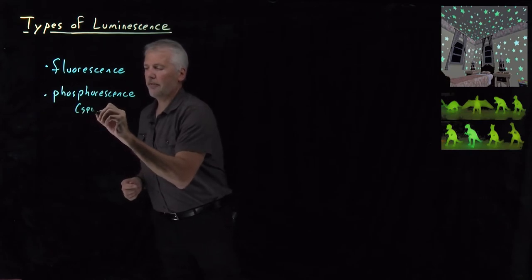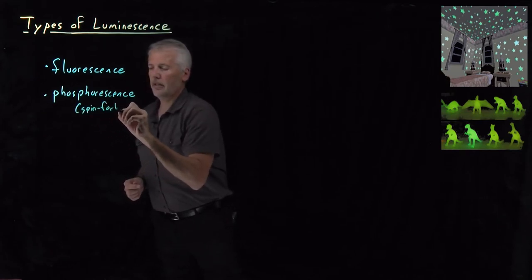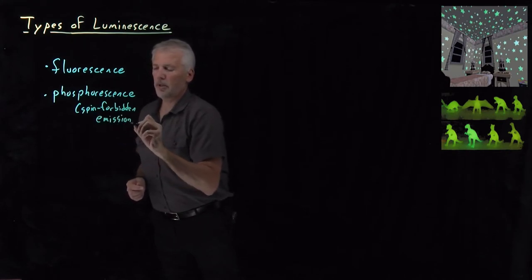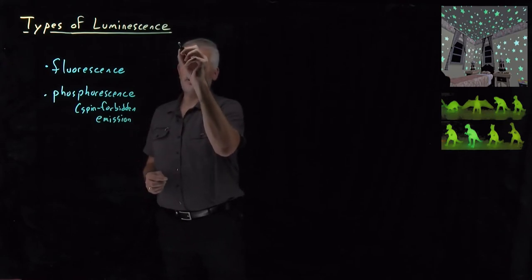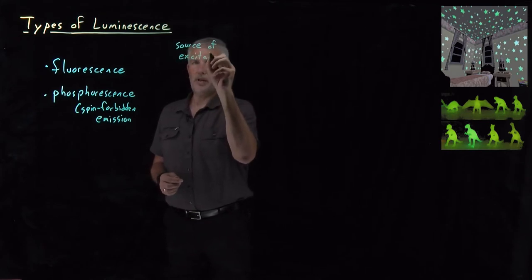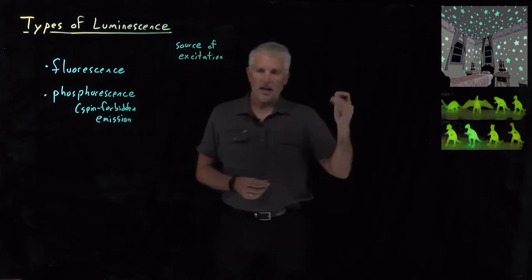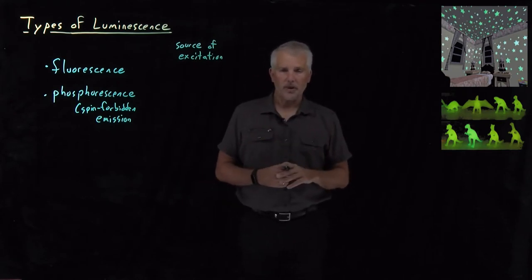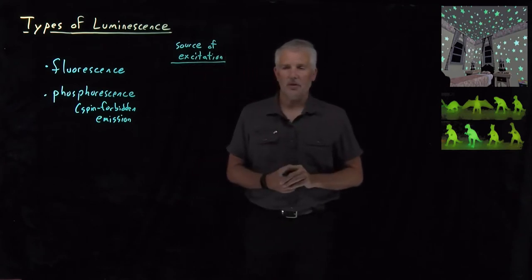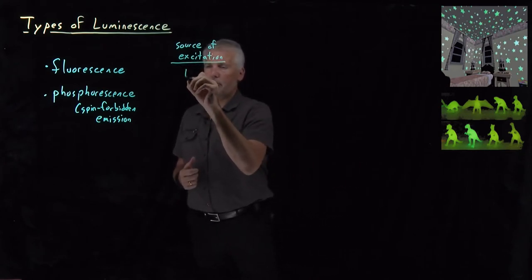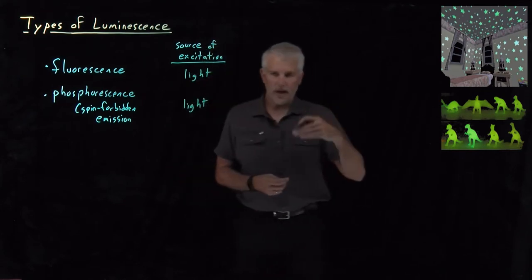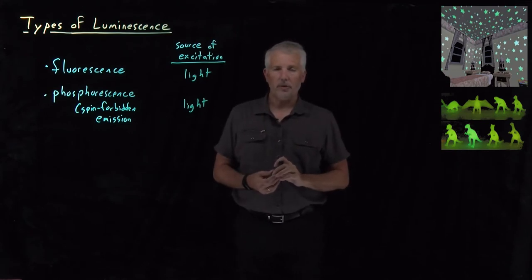The emission is spin-forbidden for a phosphorescent process. But in both of those examples, the source of the excitation is the same. In both cases, we shine a high-energy photon on the molecule. It gives us back a lower-energy photon, either much later in the case of phosphorescence or immediately within nanoseconds or so in the case of fluorescence. For both of those cases, we've excited the molecule with light, and it gives back light of a lower energy, lower frequency, longer wavelength.